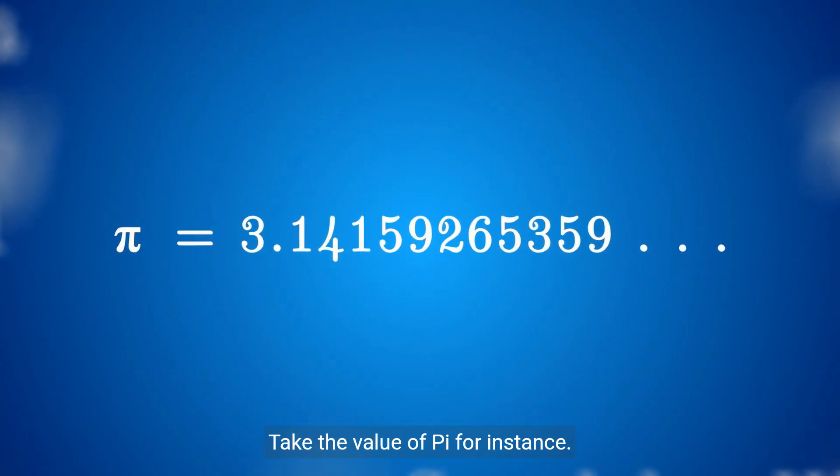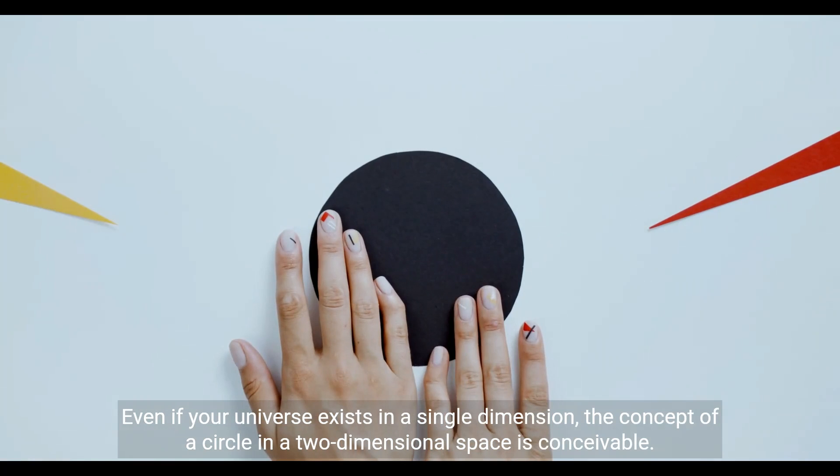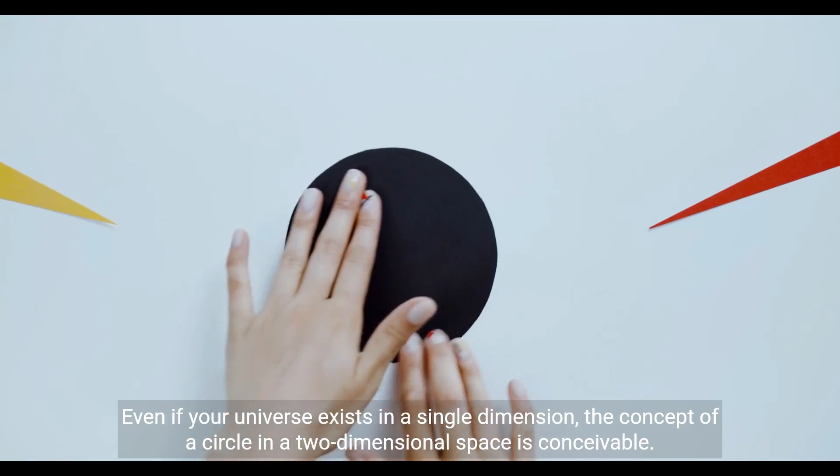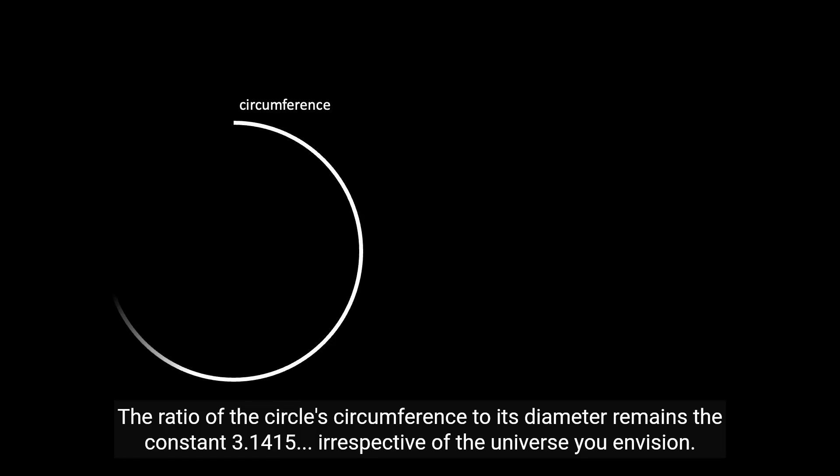Take the value of pi for instance. Even if your universe exists in a single dimension, the concept of a circle in a two-dimensional space is conceivable. The ratio of the circle's circumference to its diameter remains the constant 3.1415, irrespective of the universe you envision.